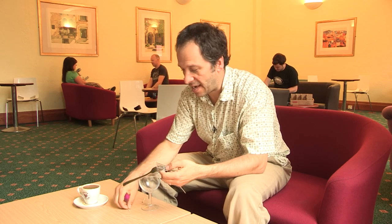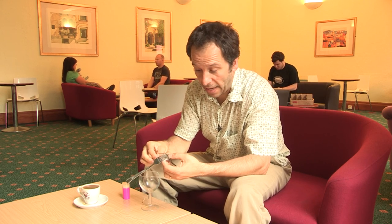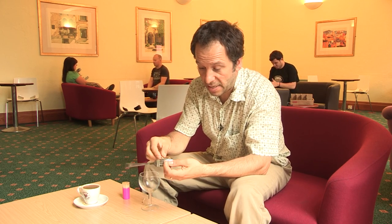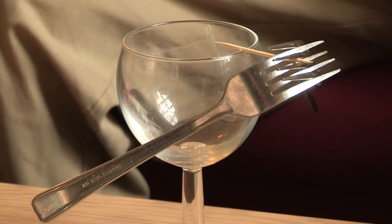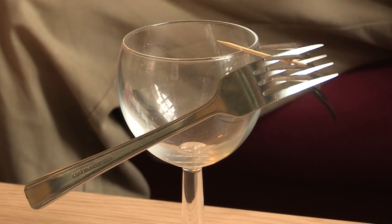All you need are two forks and you interdigitate the tines of the forks like that and then take a cocktail stick or a toothpick and push it in like so and then you just balance the whole thing on the edge of a glass.